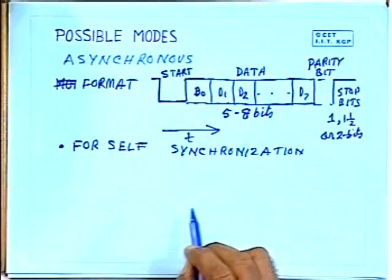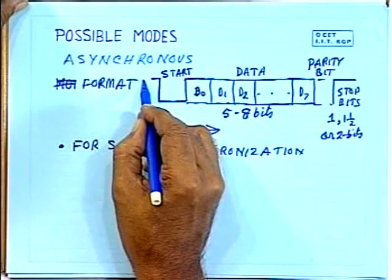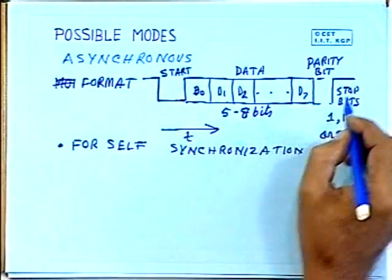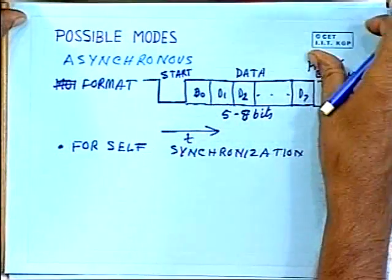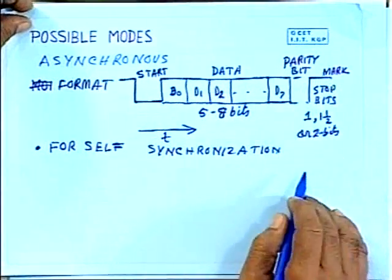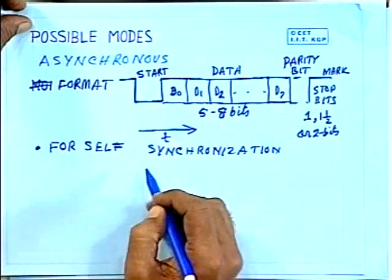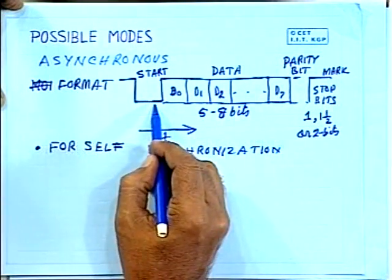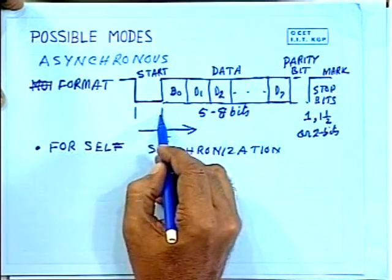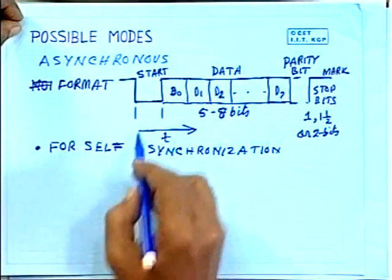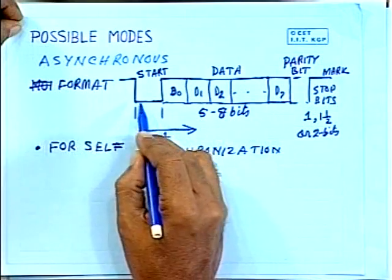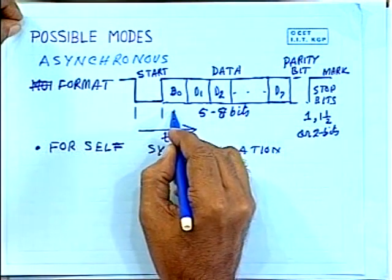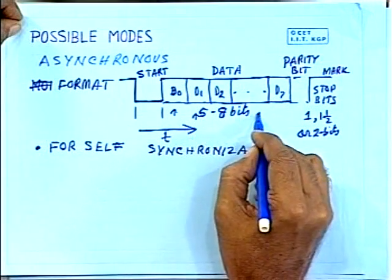For self-synchronization of each character: initially, whenever data is not being sent, the line remains in the mark state — that is called the mark position or high state. As the line goes down, the receiver knows that some data is coming. The rate at which it is being sent — the duration of each bit — is also predetermined and known by the receiver. After the start bit comes, the receiver is ready to receive data and reads in the middle of each bit.